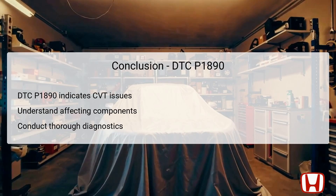In conclusion, DTC P1890 signifies a critical issue within the CVT speed control system on Honda Civics from 2016 to 2021. Understanding the components involved — such as the TCM, drive, and driven pulleys — is essential for effective troubleshooting. Recognizing the possible causes and symptoms enables technicians to conduct thorough diagnostics, ensuring that underlying issues are addressed promptly. Following a systematic troubleshooting process significantly improves the likelihood of accurately diagnosing and repairing the root cause. Additionally, performing preventive maintenance helps avert future complications, ensuring smooth operation of the CVT system, enhancing the driving experience, and reducing the occurrence of unexpected repair needs.